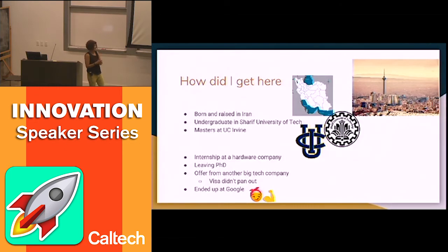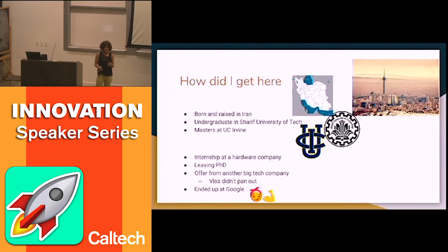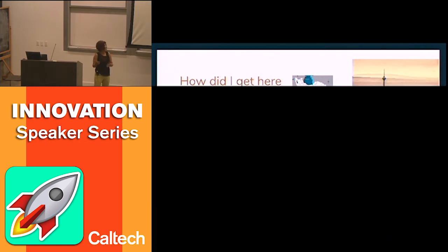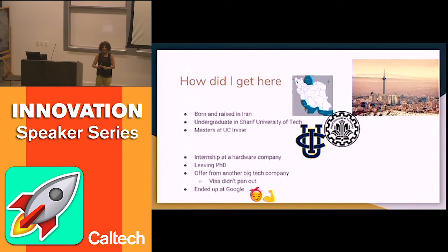It felt really bad. Because I already had the offer from the tech company when the hardware company offered me a job, I didn't negotiate my salary — I thought, oh, I'm not going to be here anyway. And I ended up staying there nine months. What I learned was: even if you think you're not going to be somewhere, get the best you can. Don't drop the ball before you've actually left. Make sure everything is in place before you walk away from your current job.